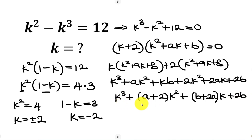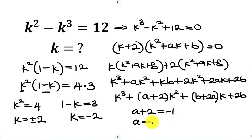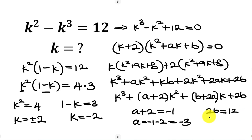To get the values of a and b we compare this expanded expression with the original. The coefficient of k squared here is a plus 2, which equals the coefficient of k squared in the original, which is negative 1. So a equals negative 1 minus 2, giving a equals negative 3. For b, the constant term is 2b, which equals 12 from the original, so dividing both sides by 2 gives b equal to 6.